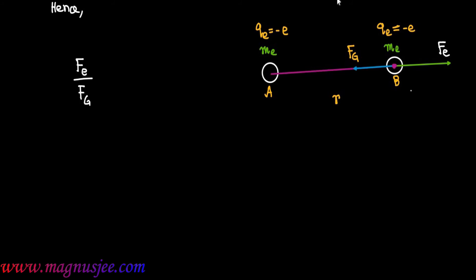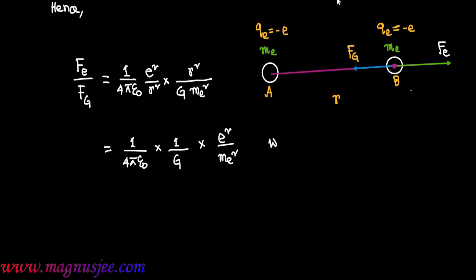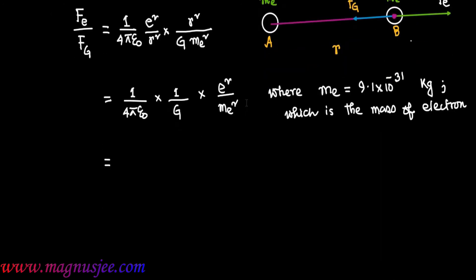Hence, Fe/Fg = [(1/4πε₀) · e²/R²] × [R²/(G · Me²)] = (1/4πε₀) · (1/G) · (e²/Me²), where Me is the mass of one electron, which has the value 9.1 × 10⁻³¹ kg.